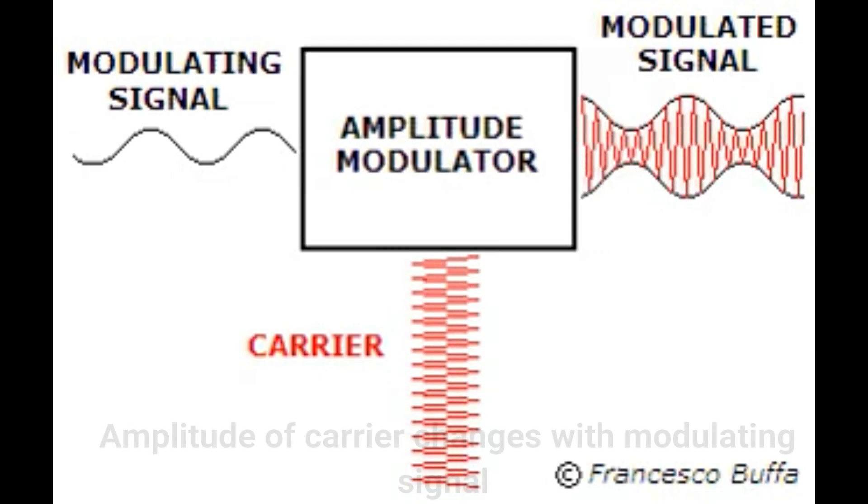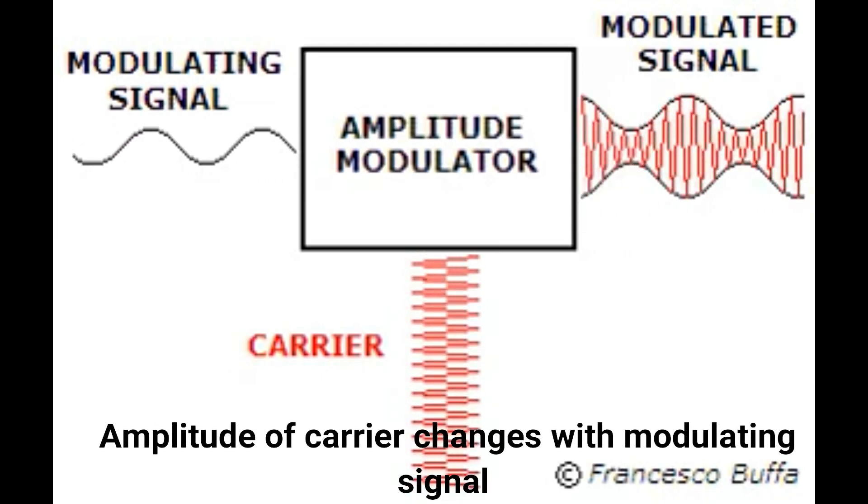Amplitude modulation: here, amplitude of carrier signal will be altered with respect to modulating signal and we will get amplitude modified signal as output.